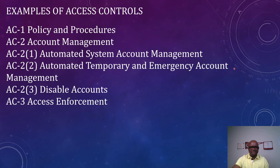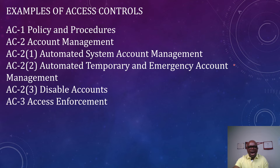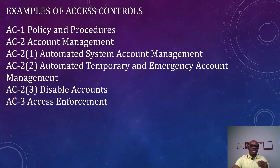We have another example: AC-2 Enhancement 2 — Automated Temporary and Emergency Accounts. This means that if any organization chooses to have a temporary account or emergency account, those accounts must be automated. There must be an automated way of managing them, so it shouldn't just be that you create them and don't have control over them.